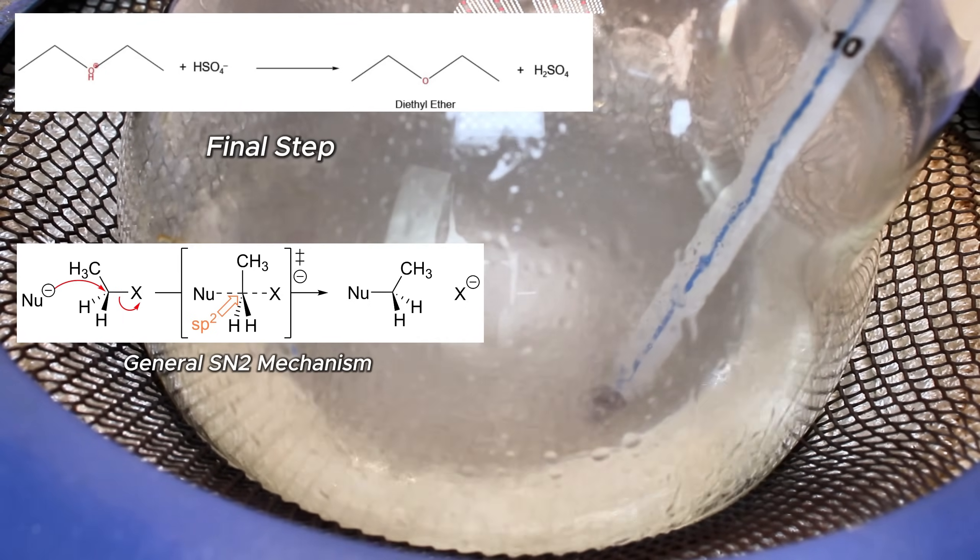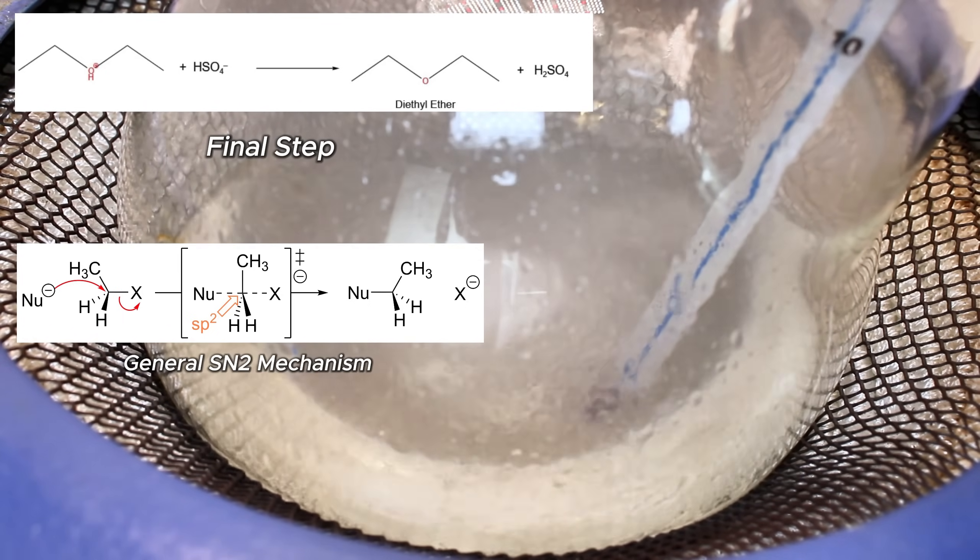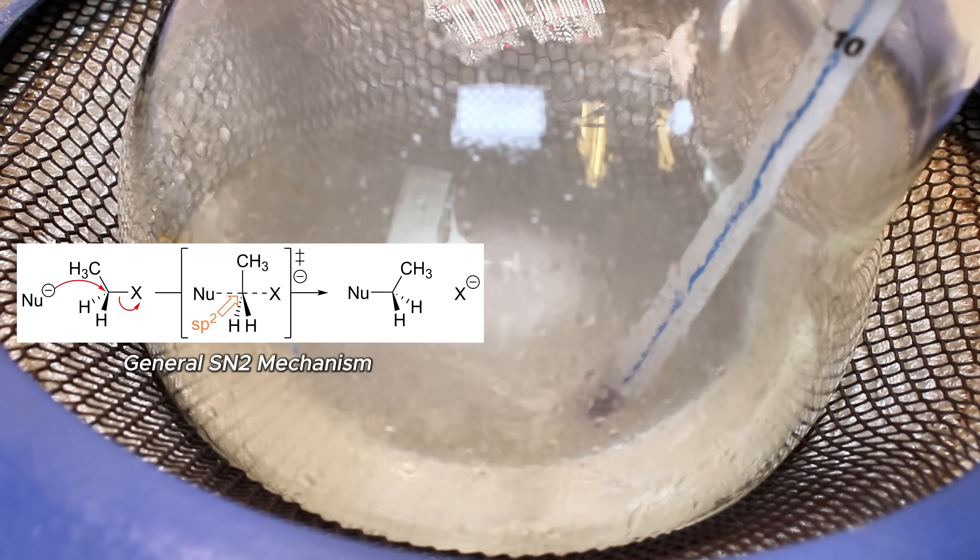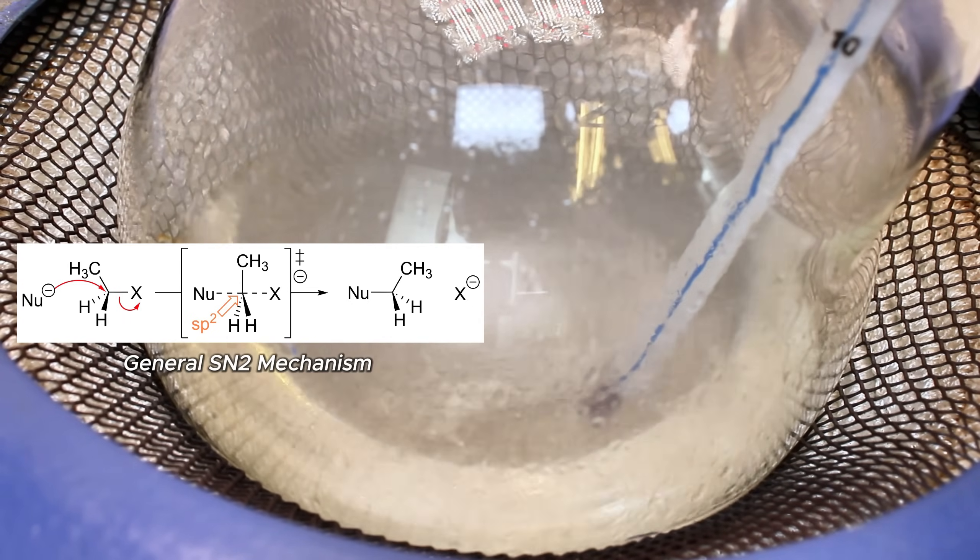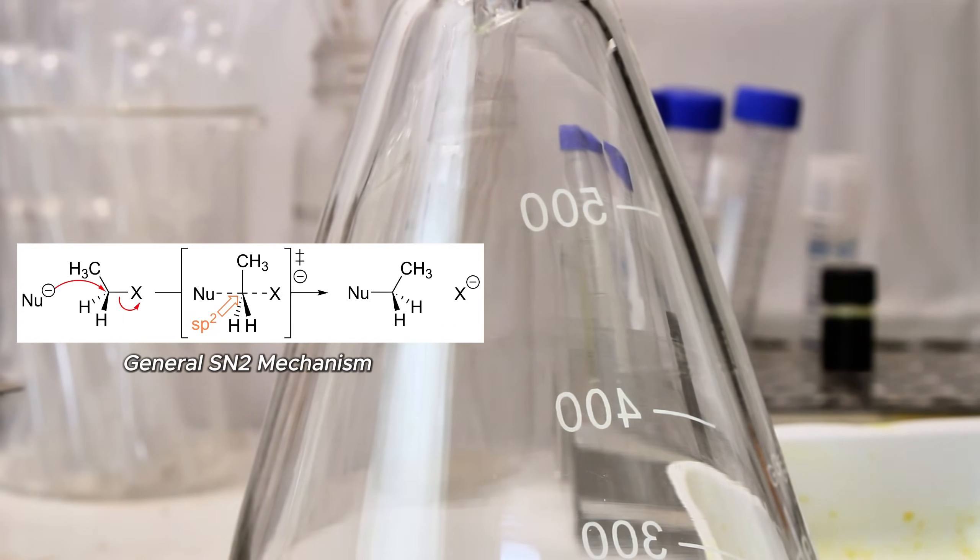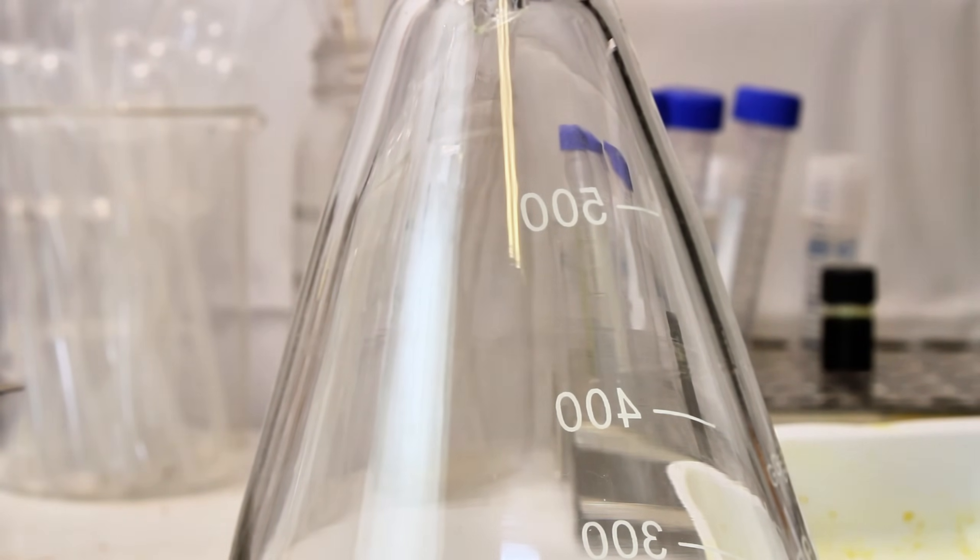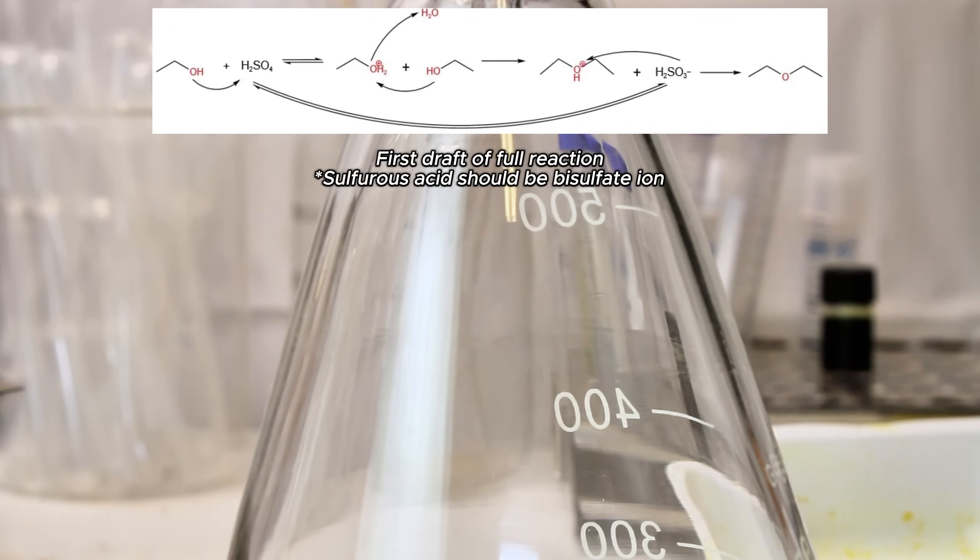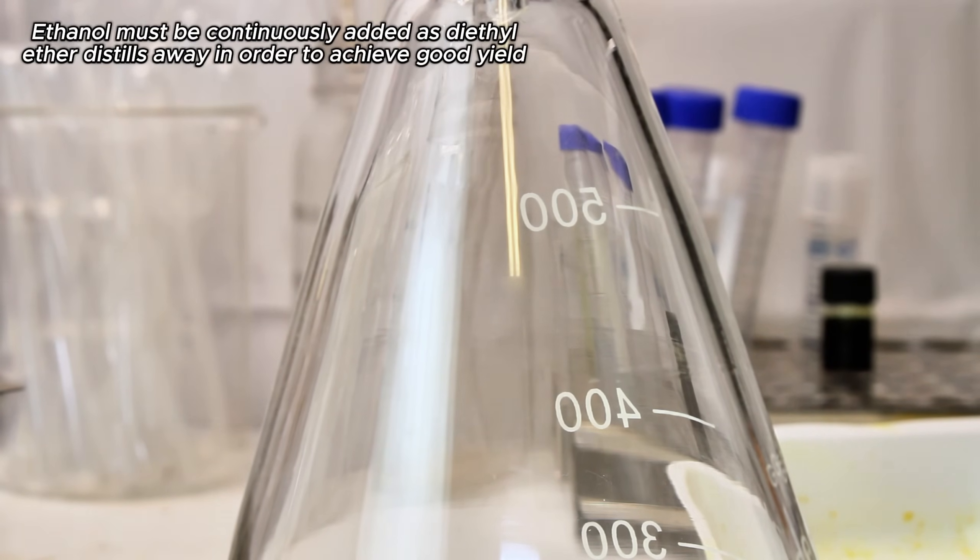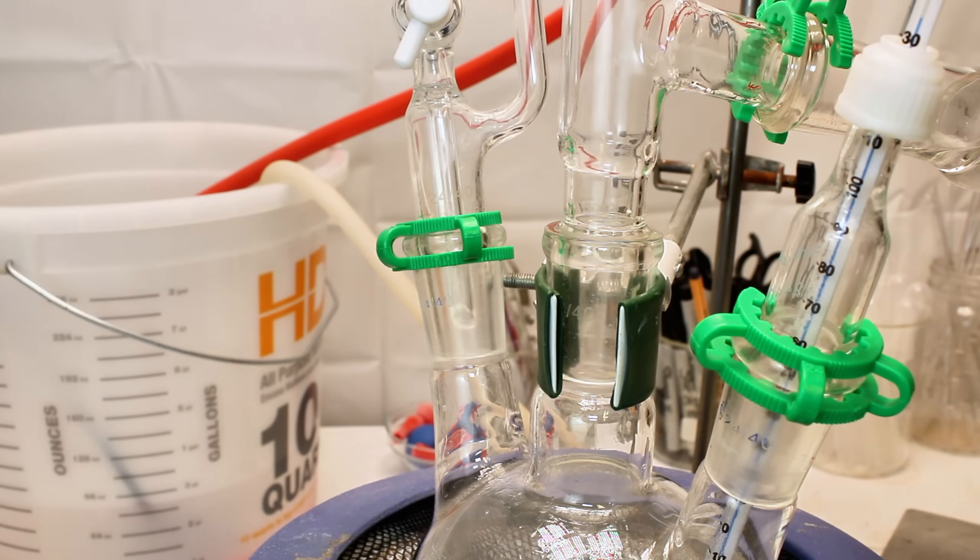Now because this is an SN2 reaction, both the neutral ethanol and the protonated ethanol are required for the reaction to proceed, as their displacement of water is the rate limiting step. Because of this, if all the ethanol was added at the beginning, you would produce some amount of ether and then be left with a flask containing nothing but sulfuric acid and protonated ethanol that's unable to further react. With that said, the purpose of the addition funnel is to continuously add more ethanol as diethyl ether is generated in order to maintain some degree of balance between the two in the reaction mixture.